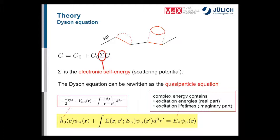We do not only get excitation energies but also excitation lifetimes, because the eigenvalue is complex — it has an imaginary part inversely proportional to the excitation lifetime. Most GW studies concentrate on the real part, but the imaginary part can also be of interest.